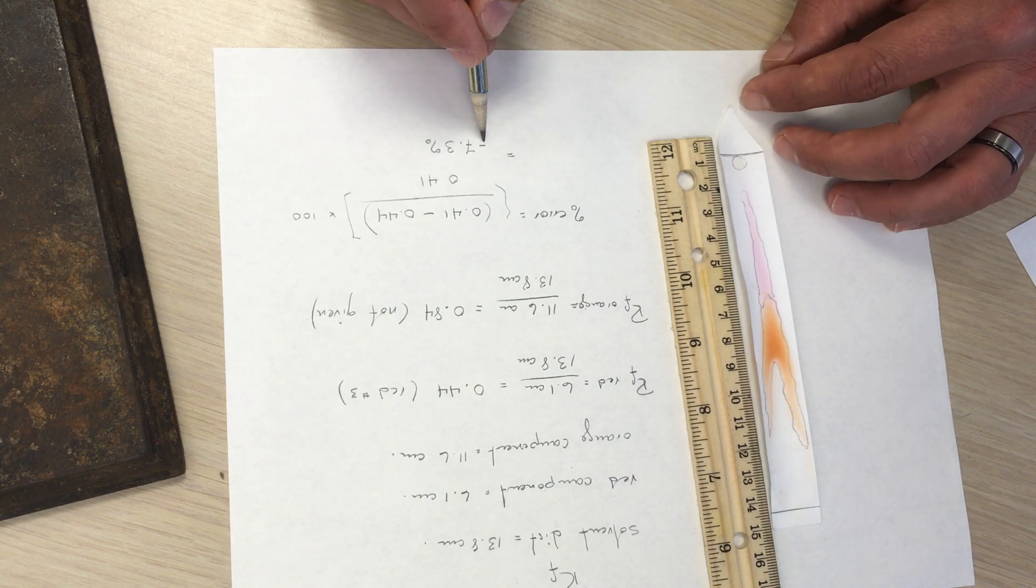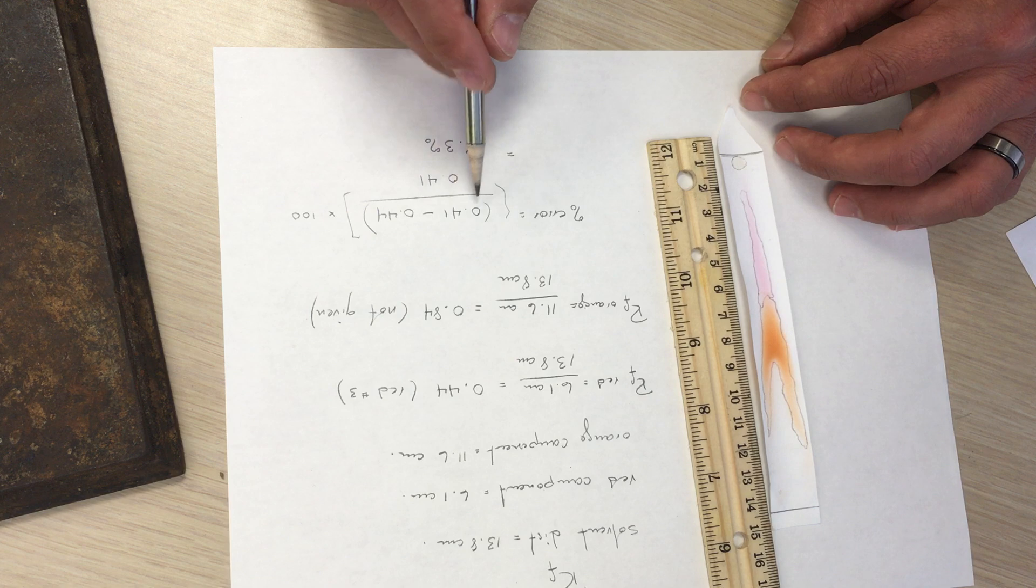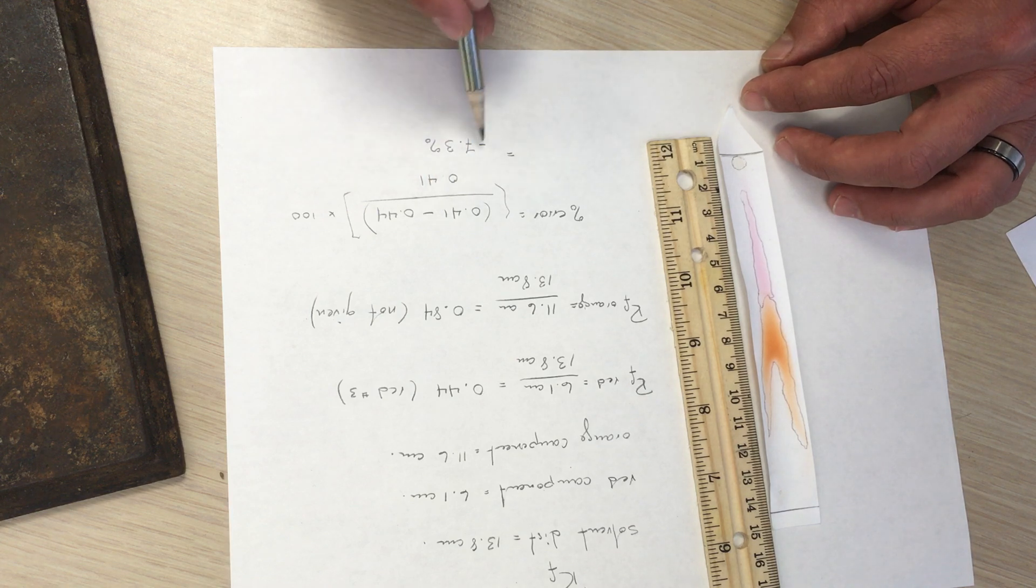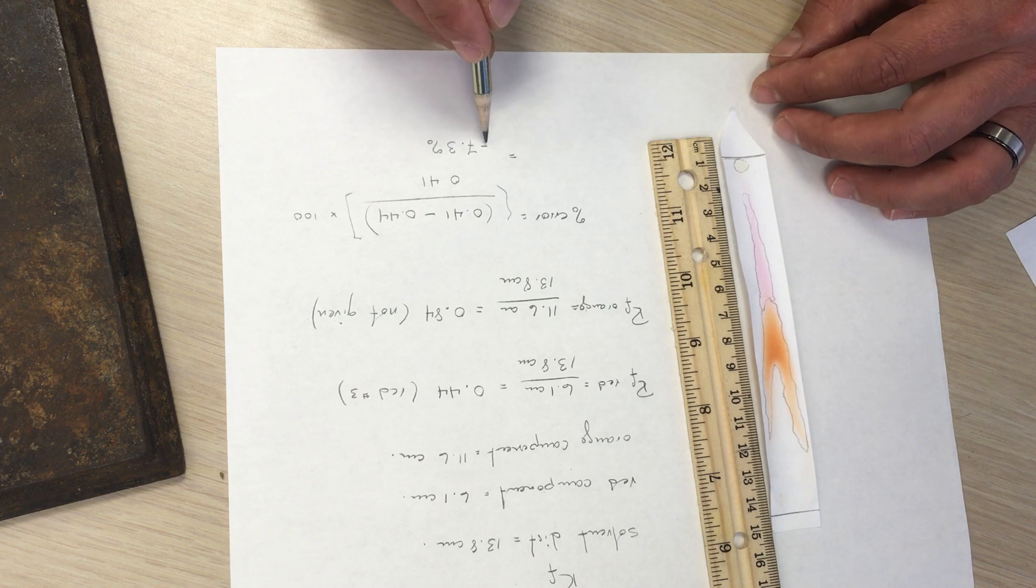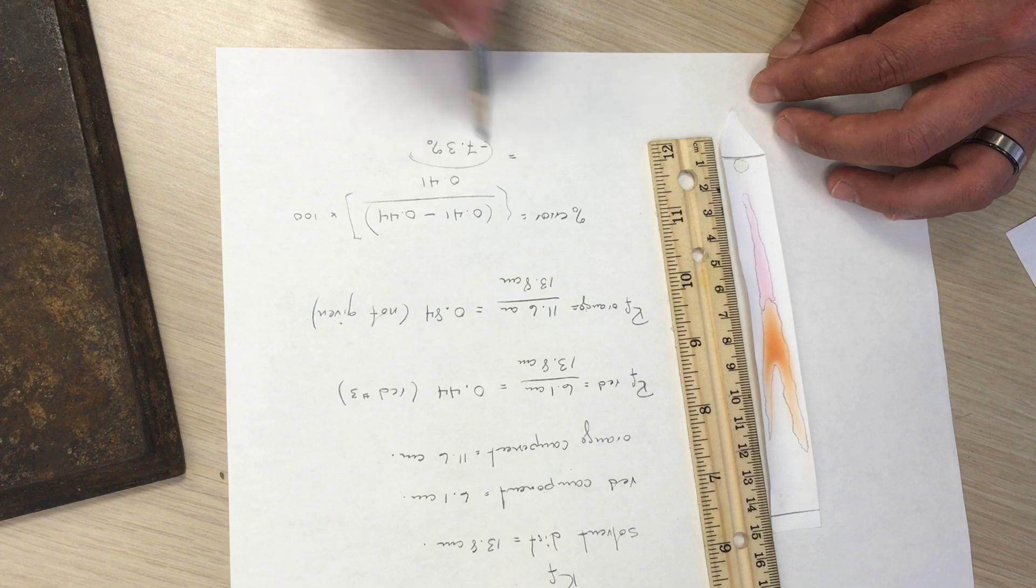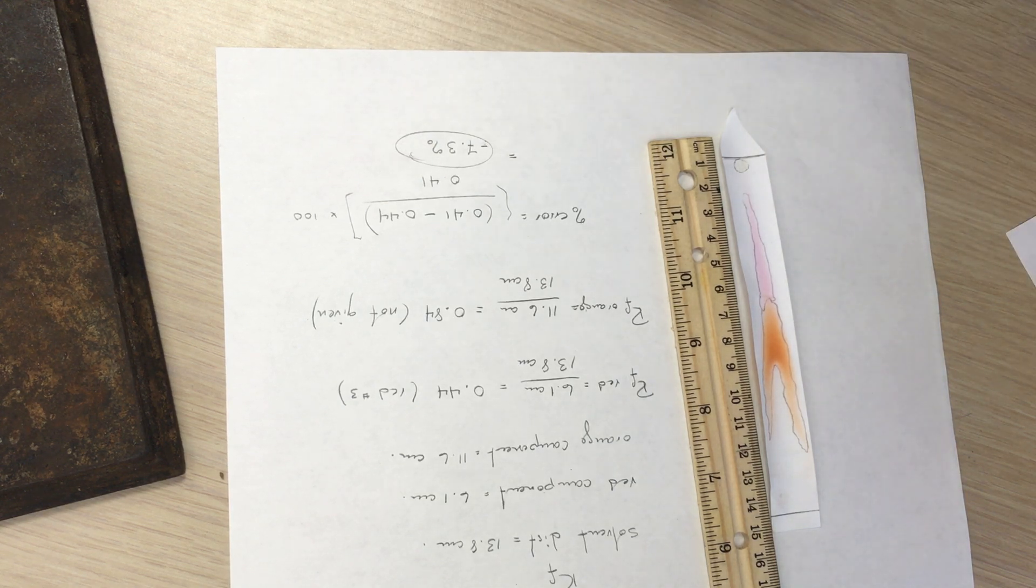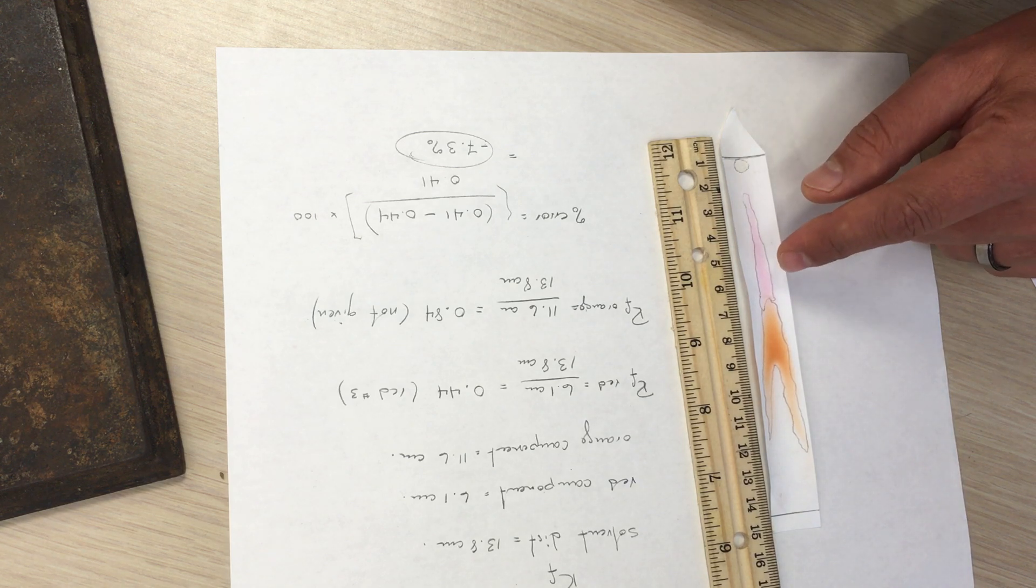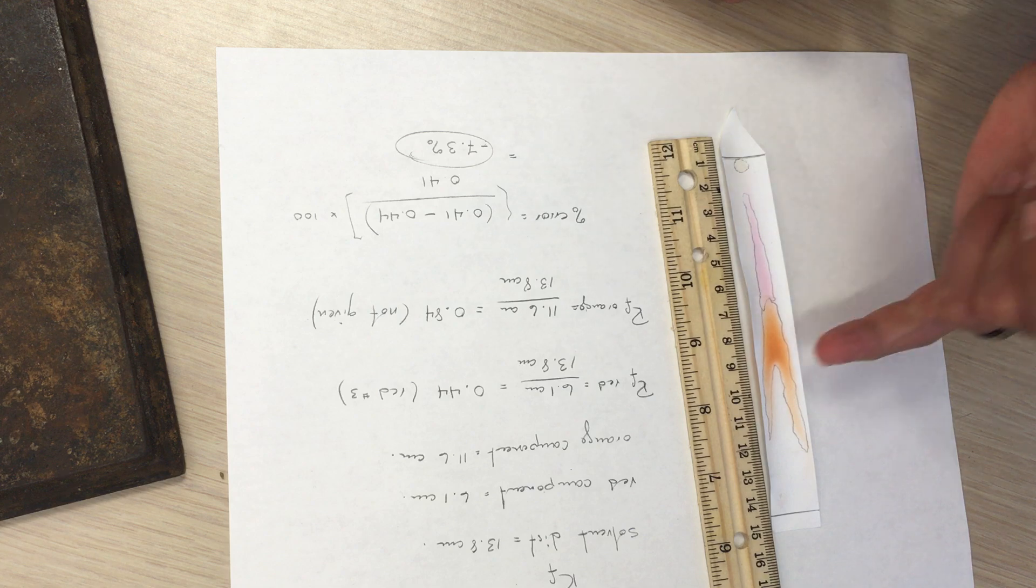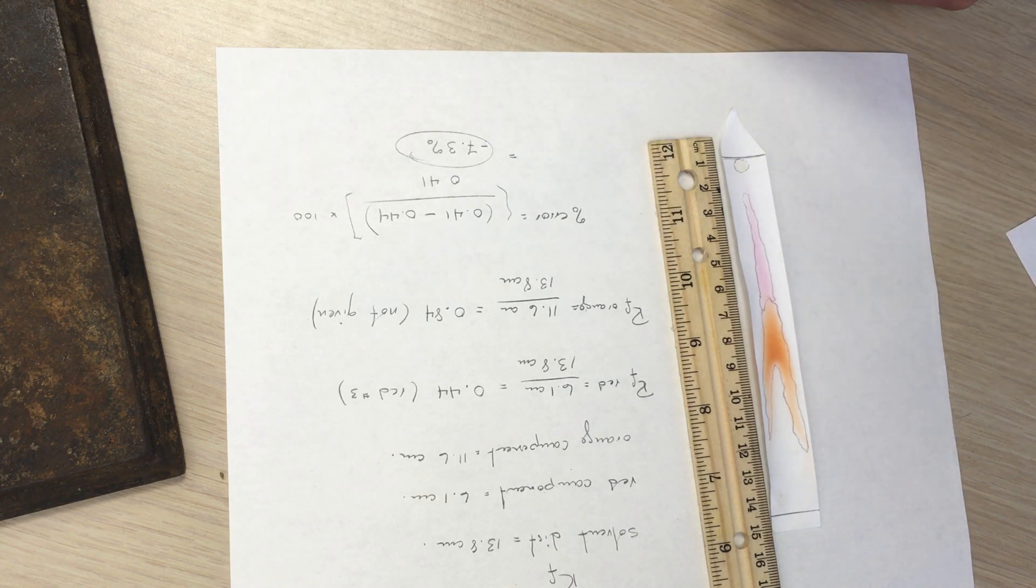The negative sign simply means that we're below the accepted value. So it's not really required in the answer. So we have to decide if 7.3% is an acceptable error. And if you decide that it is, then you can say that the red was in fact red number three, but that the orange is not known.